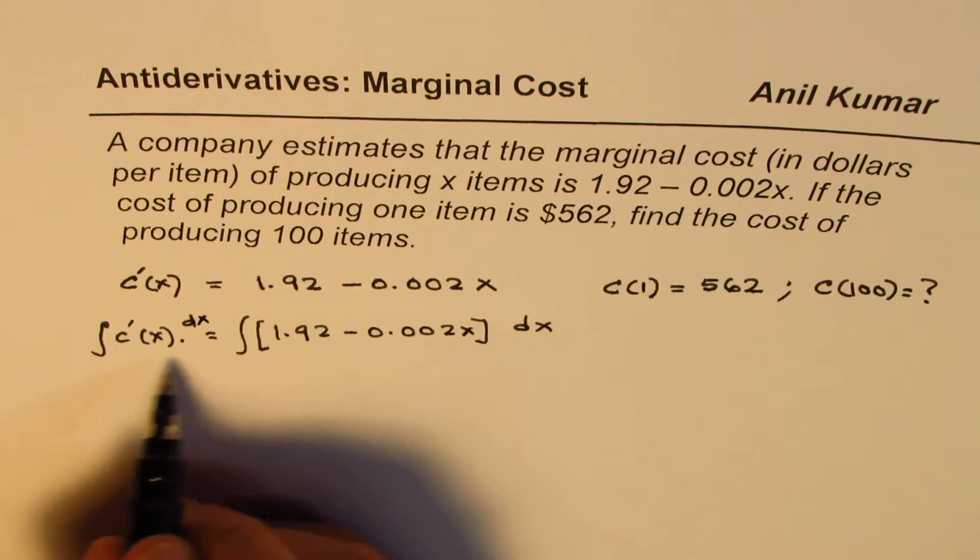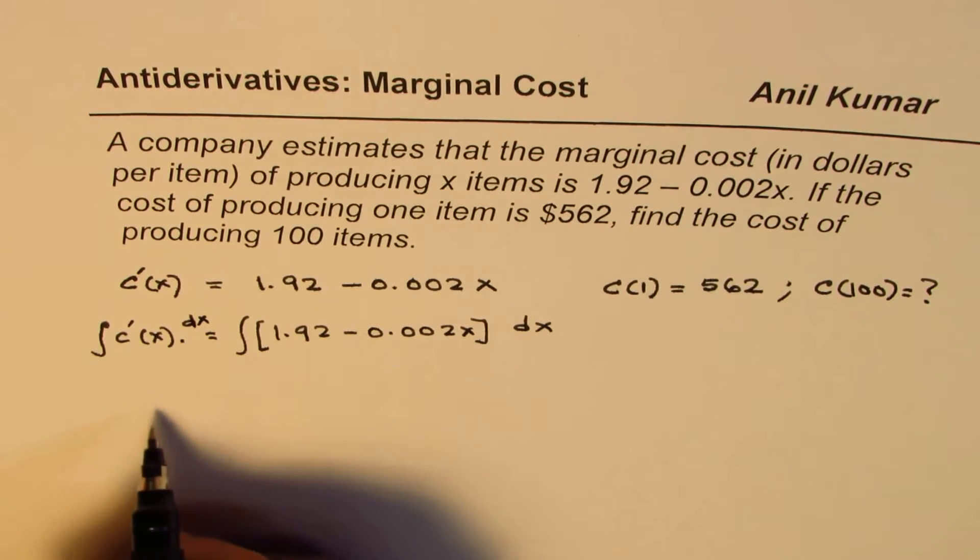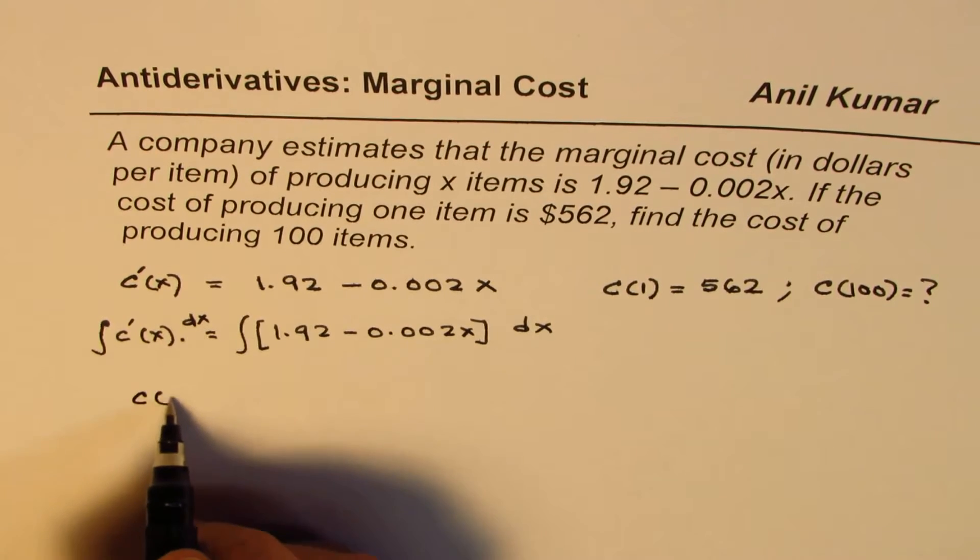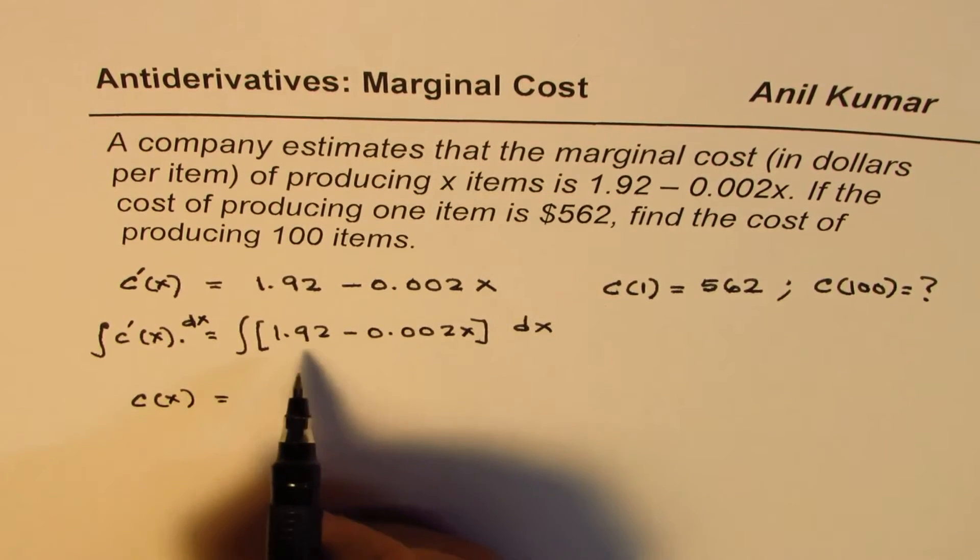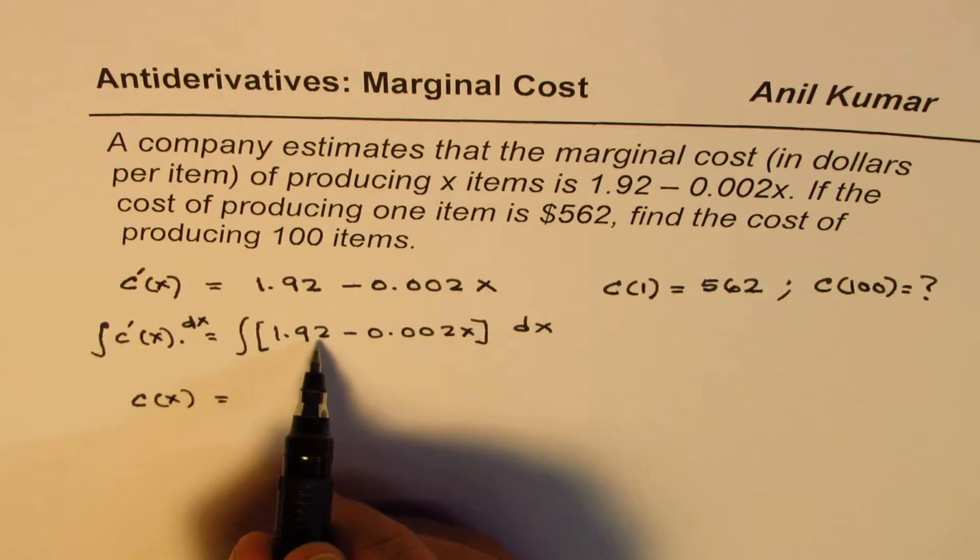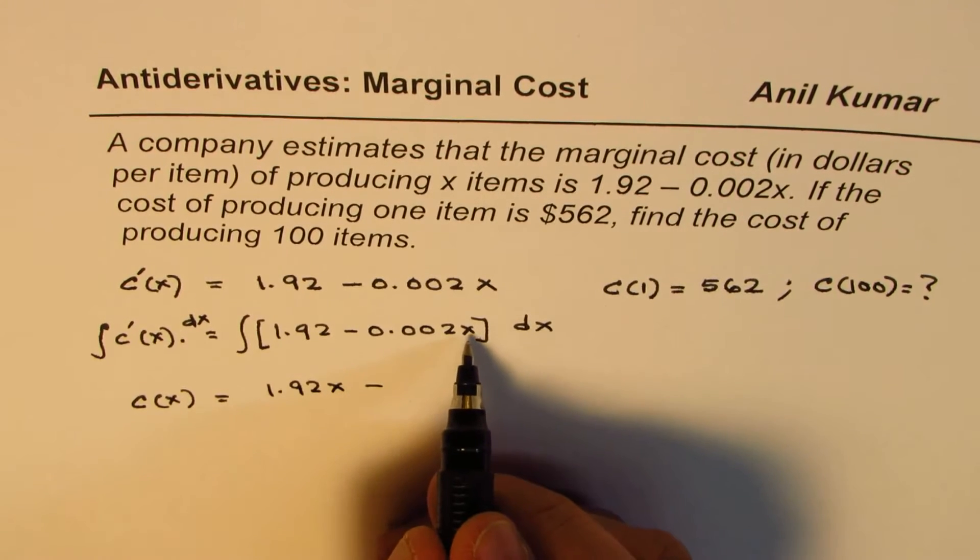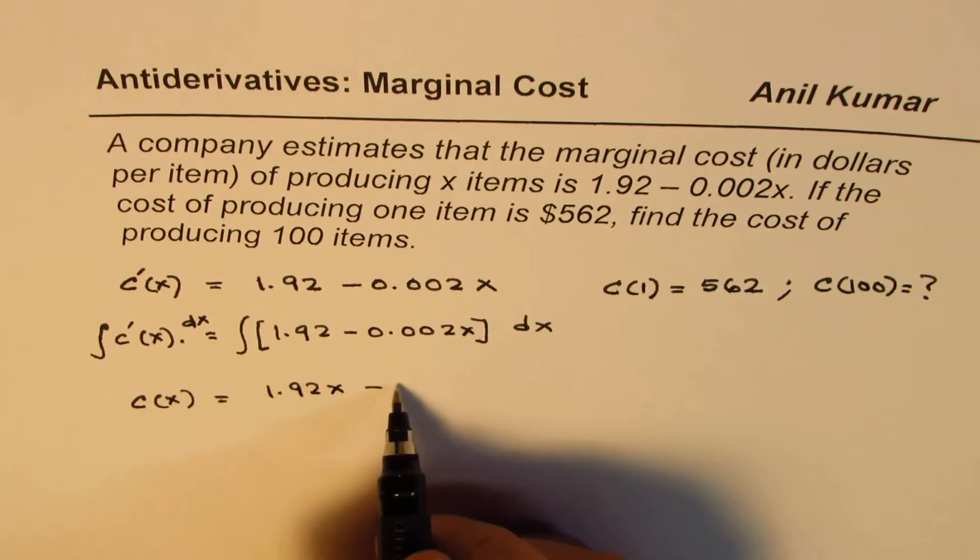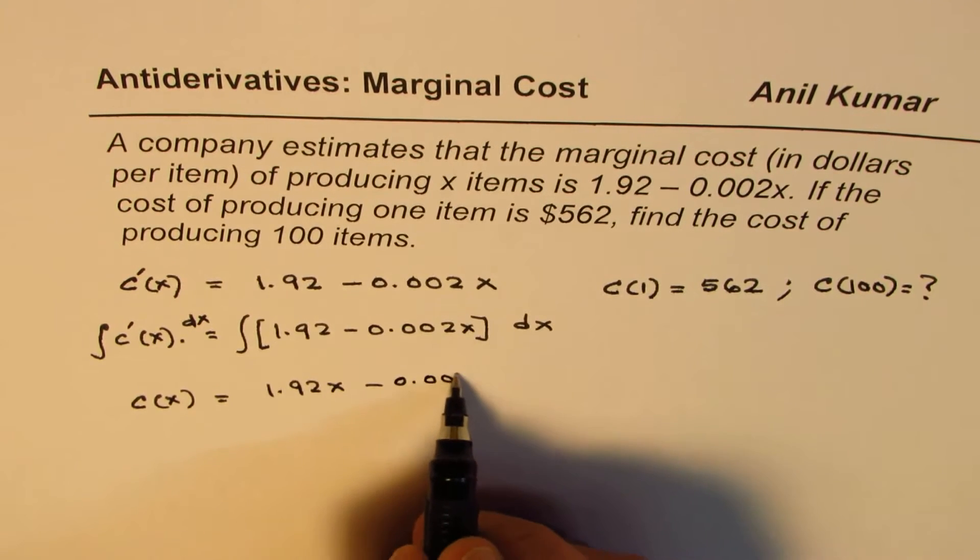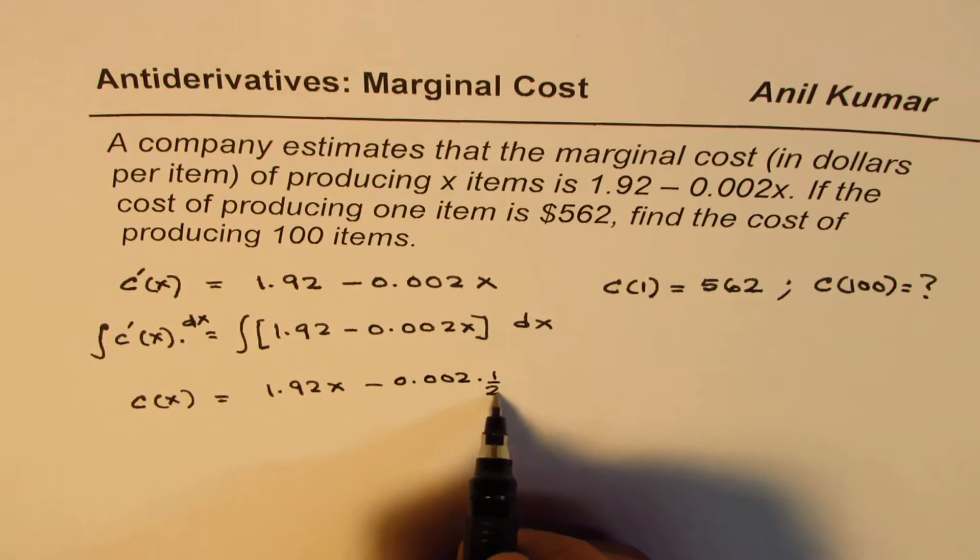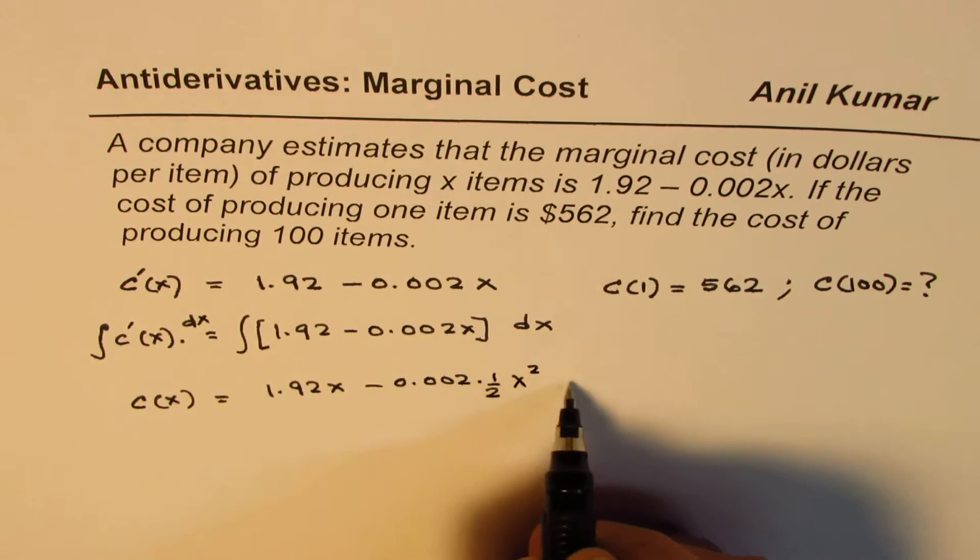The integration of the derivative is the function itself. So we get C(x) equals, here that is a constant term, so we get 1.92x. For x we get x squared divided by 2, so we get 0.002 times half x squared plus C.